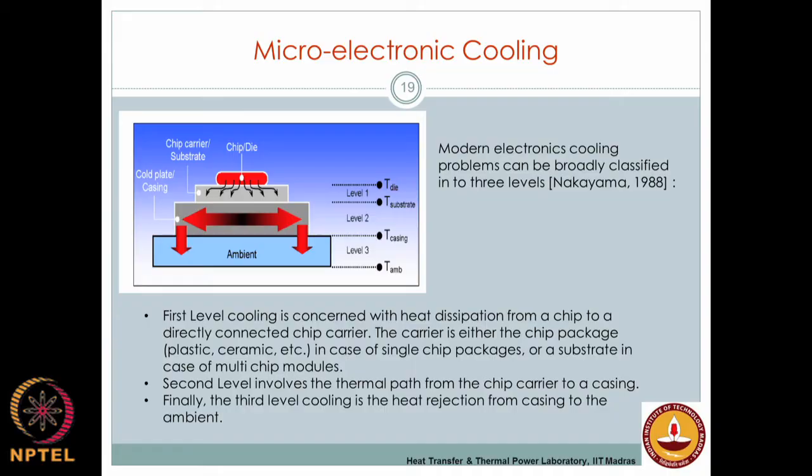The macro-scale level 3 techniques are well understood, but what is not well understood is how to dissipate heat at levels 1 and 2. Level 3 has been worked out for the last 10–20 years. Many times a processor fails because of problems with level 1 or level 2. This classification was done by Nakayama in 1988 and is broadly used in the electronic cooling industry. The micro channel cooling system fits into level 2 of cooling.